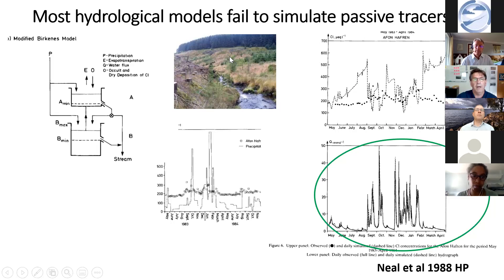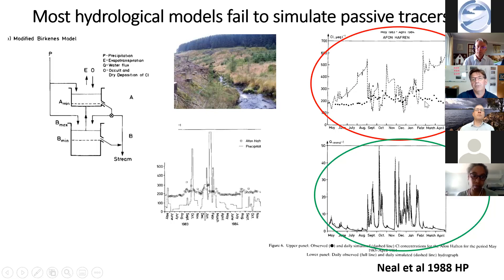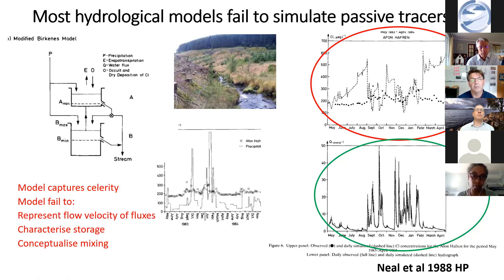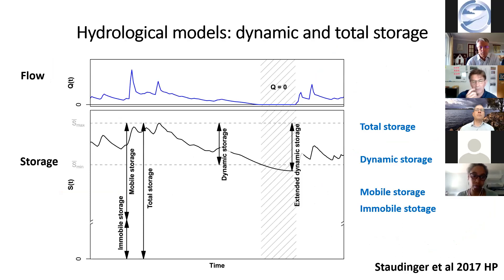When Colin and colleagues introduced chloride as a passive tracer into the model, they couldn't simulate the chloride. Chloride doesn't interact with anything in the catchment. But because the hydrological models are conditioned to simulate the celerity of the streamflow response, they don't capture the storages that give you the water velocities. In other words, the models capture celerity, but fail to represent the flow velocities of fluxes because they don't fully characterize storage or conceptualize mixing. And that's true of most hydrological models even now, despite attempts to advance this field over the last few decades.